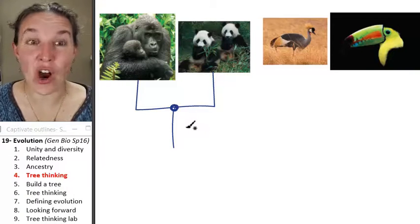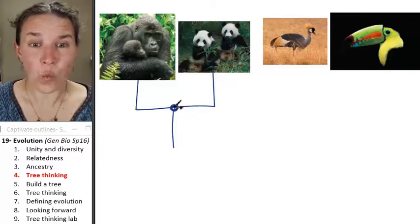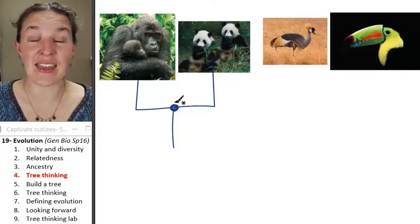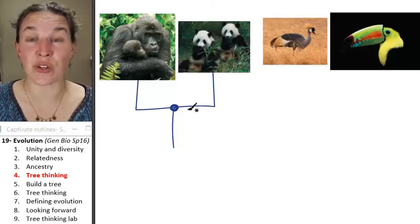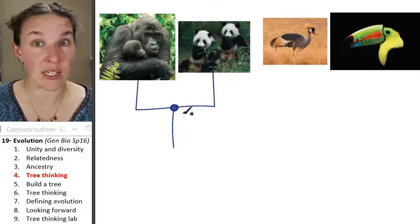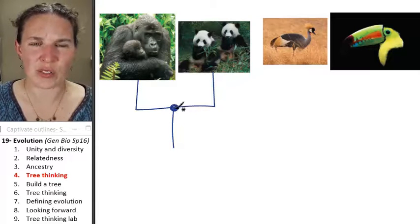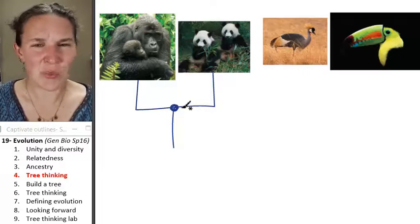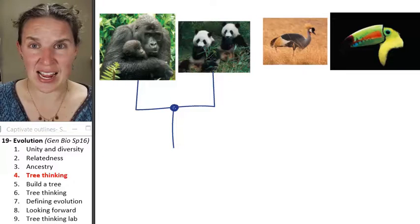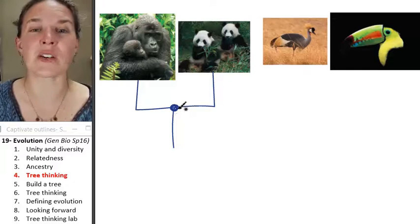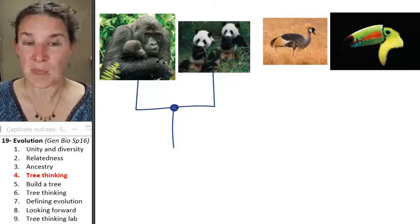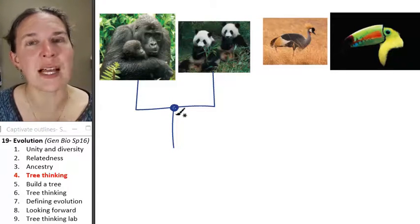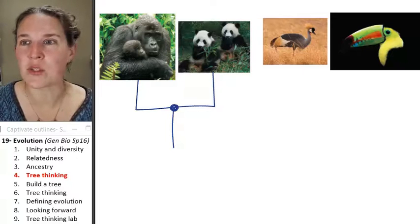Common ancestors are hypotheses. We don't know what they actually looked like. We have a pretty darn good sense that these two critters are closely related to each other, but we don't know what the critter looked like that gave rise to both of them. And chances are pretty excellent that that critter did not have, that ancestor probably didn't look like a panda. It probably didn't look like a gorilla.